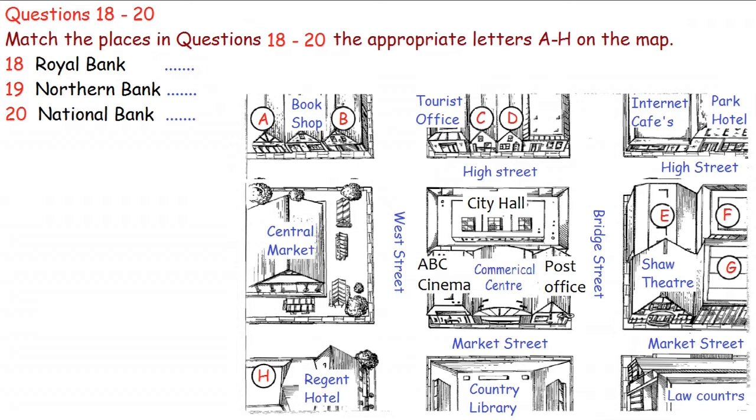Fine. And the last one, the National Bank? You can go either way from the centre, really. Up West Street or Bridge Street, and then along past City Hall. The bank is on the other side of the road, right next to the tourist office. You can't miss it.